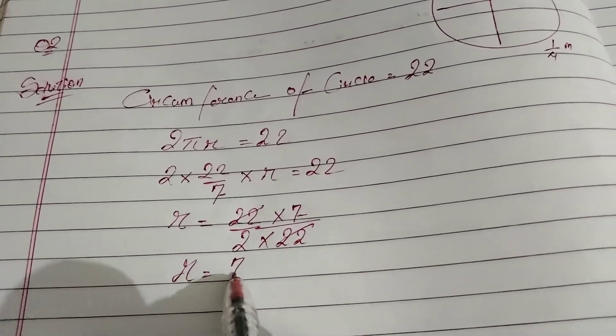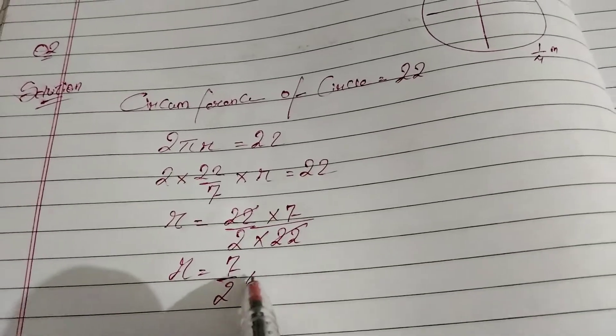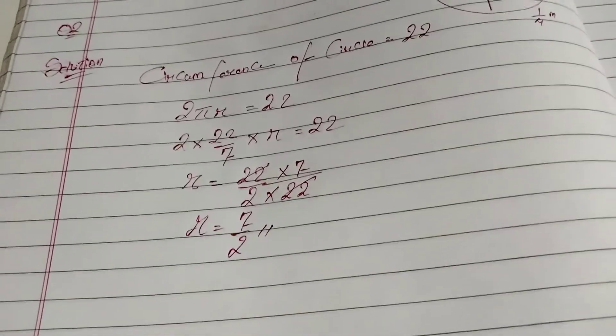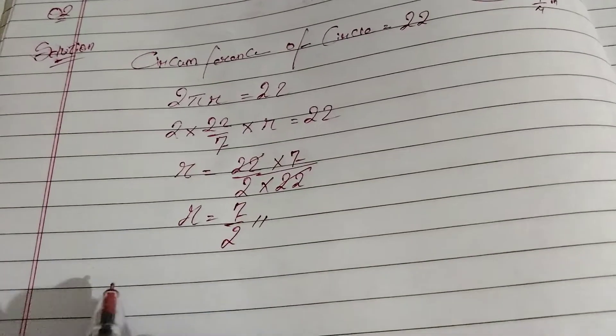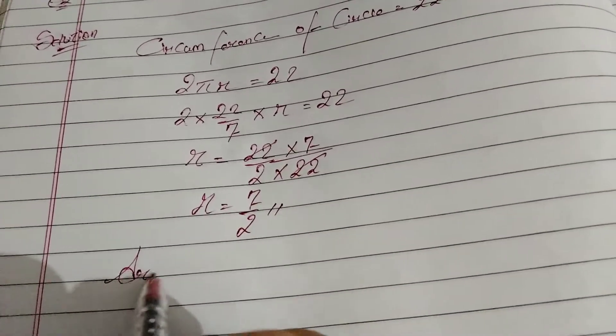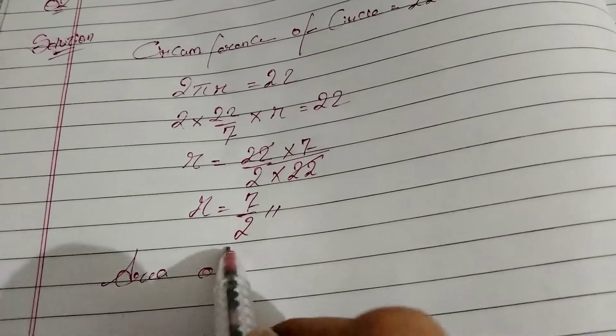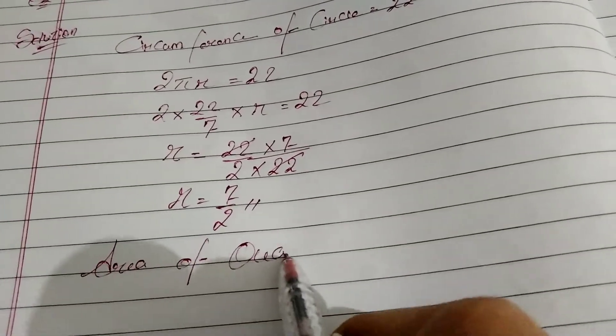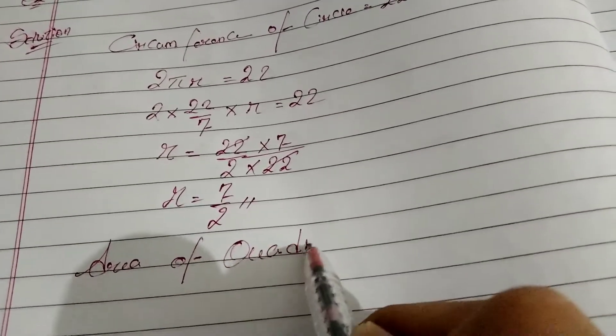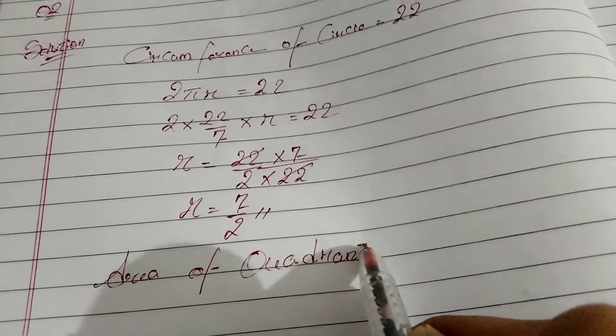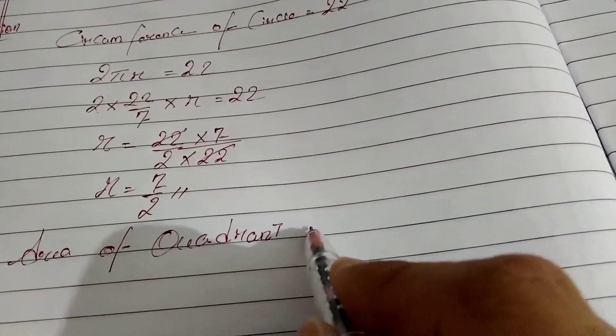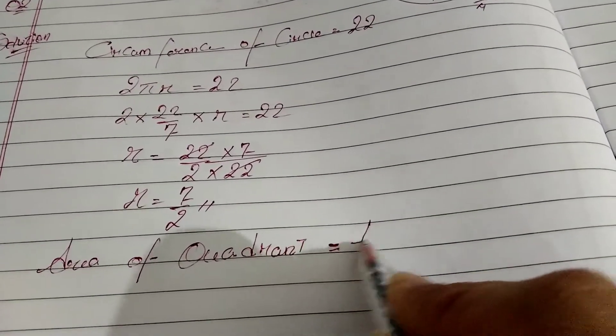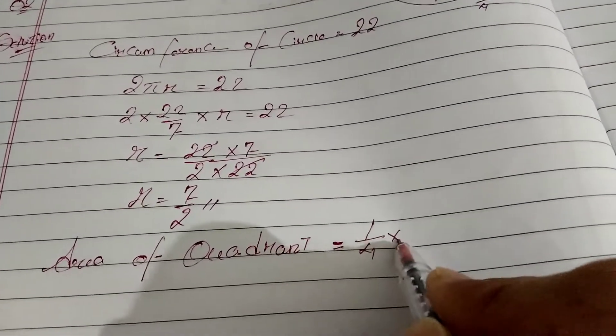Now we have found the radius. Now let's solve the area of quadrant. So area of quadrant, the formula is 1 by 4 into...